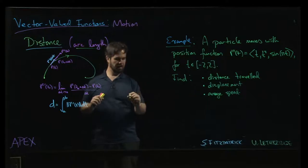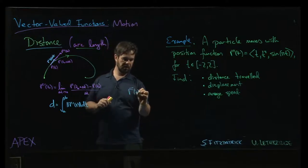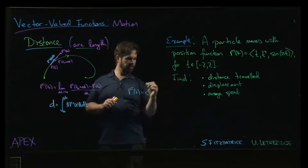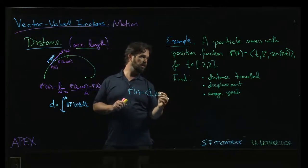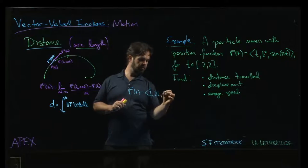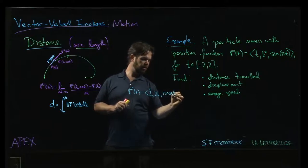So r prime of t, take the derivative component-wise: 1, 2t, and then we have pi cosine pi t.